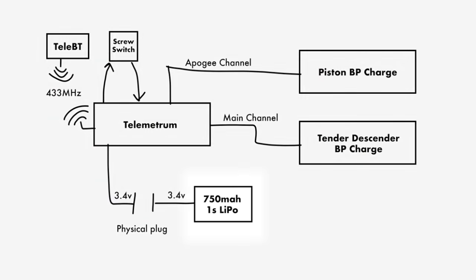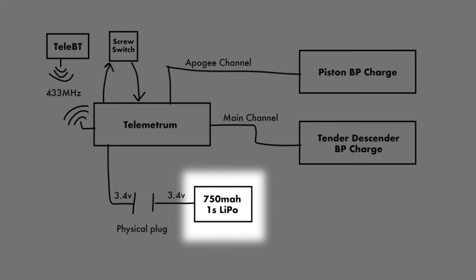If you watched the recovery video, you'll know we actually had two redundant Tender Descenders, and the big secret here is that to add to all of this redundancy, each computer could fire both Tender Descenders, so we wired up four total pyrocharges to the two Tender Descenders. Both could be fired either by the Telemetrum or Ava. To close this out, Telemetrum is powered by a 750 mAh LiPo battery.